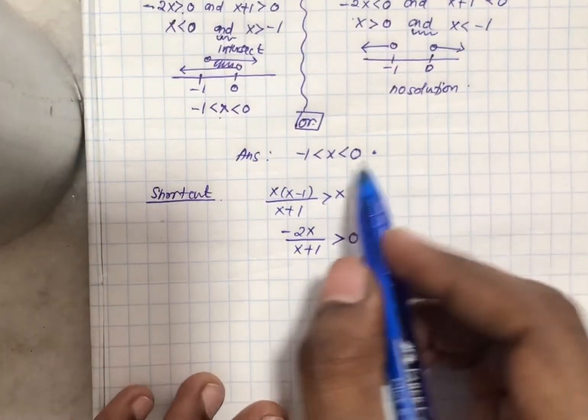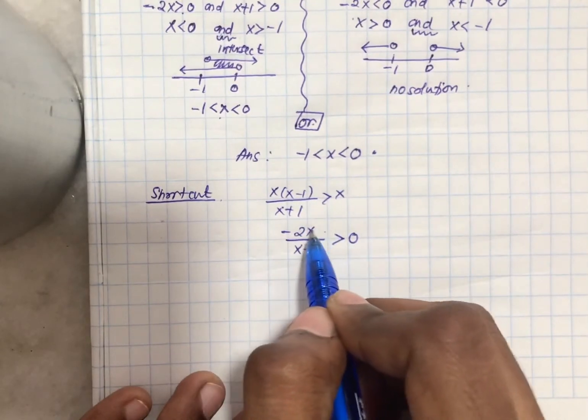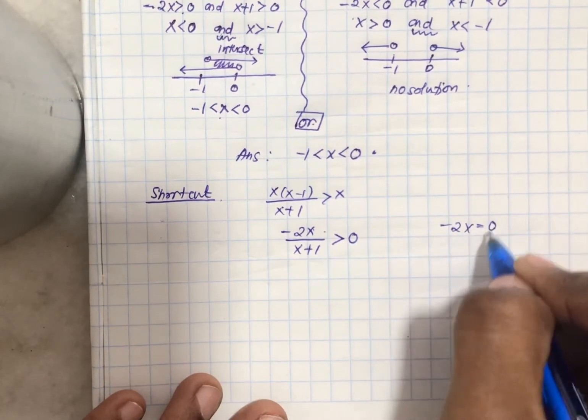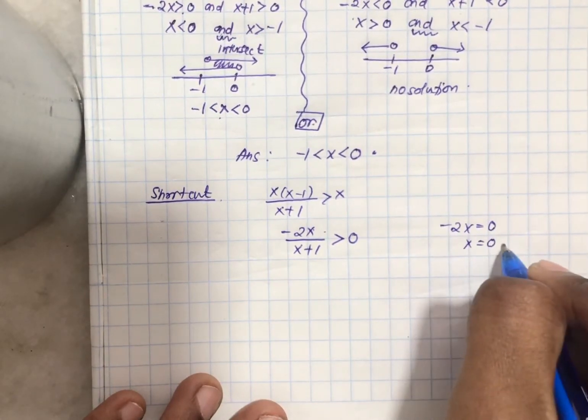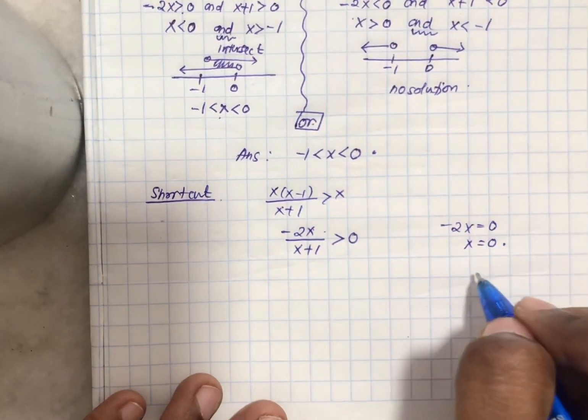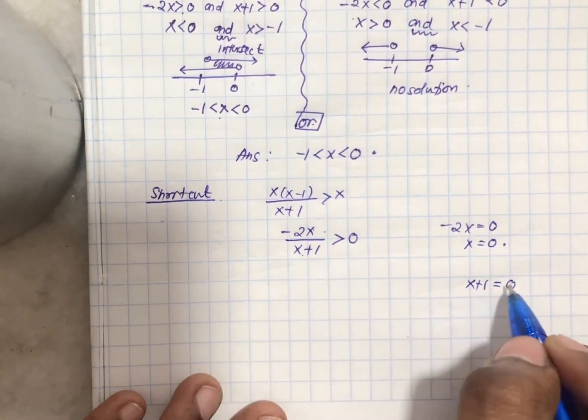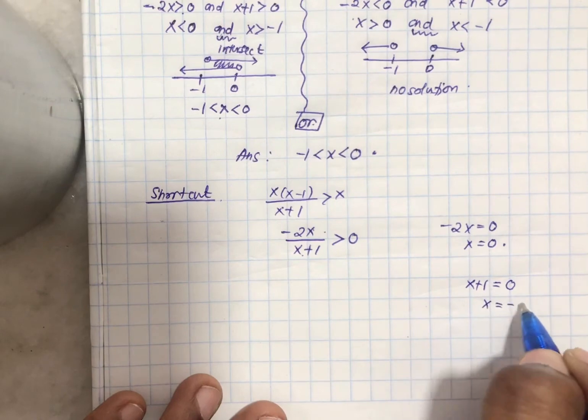So the shortcut works like this. What you do, you just take the upper part and then you equate to 0, find the critical value. So what will you get? You just do negative 2x equal to 0. So you are getting x equal to 0. This is the first critical value. Then the next one is x plus 1 equal to 0. You take the denominator, you equate to 0, you find the critical value. You got negative 1.